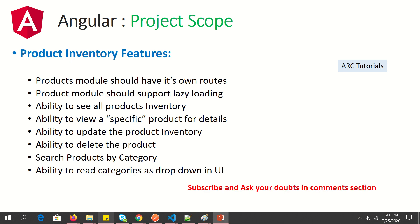Some of the things we will be building in this series: a product inventory with a product module that has its own routes and supports lazy loading. We should be able to see all products, view a specific product by ID, update the product inventory, soft delete or delete a product, and search products by category. These are the high-level use cases we will build in this series.